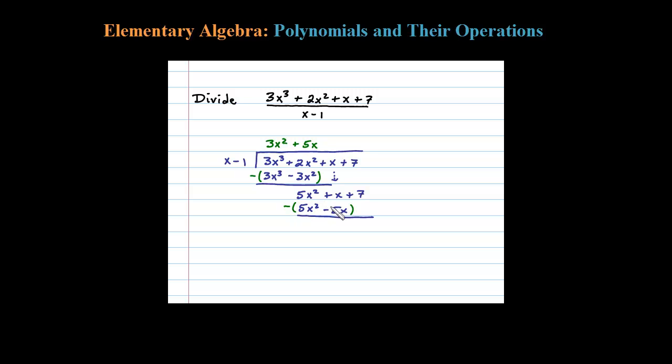Distributing the negative, that's really going to be a plus, so x plus 5x is 6x. Bring down the next term.